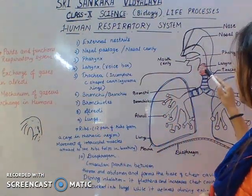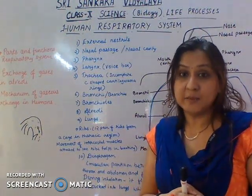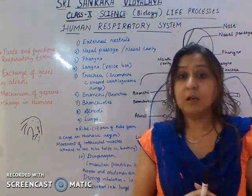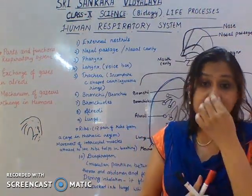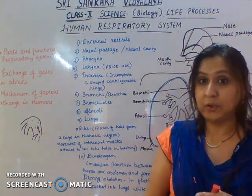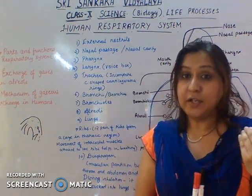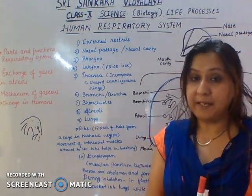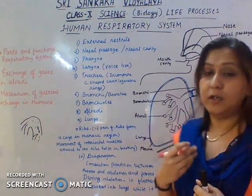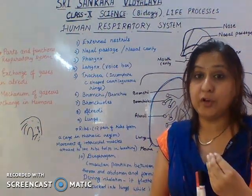After the pharynx, the next part is the larynx. The larynx is also called the voice box — it is where we produce sound. It consists of two vocal cords; when air passes through them and they vibrate, sound is produced. In males, the larynx usually protrudes outward and is visible.